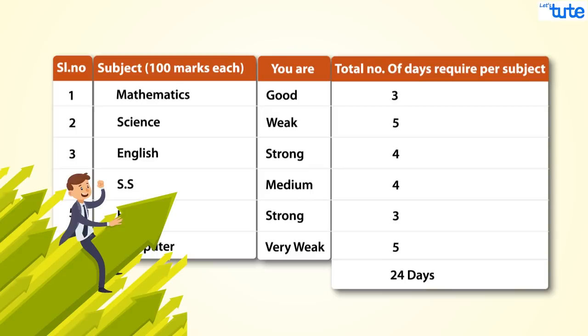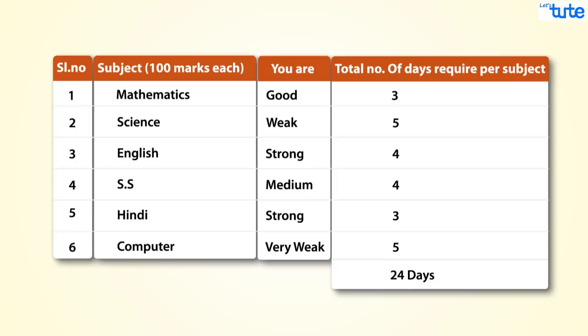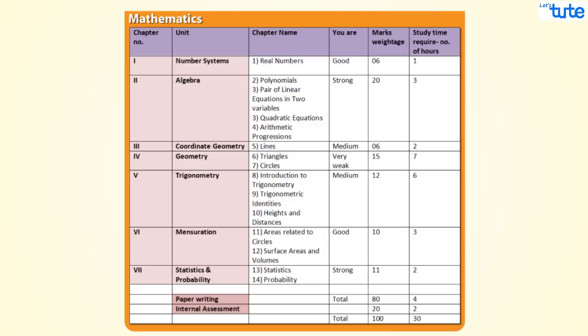This exercise is for all the subjects. Now let's do the time segregation for each subject. First, let's talk about mathematics. You can divide the time depending upon your conviction on the chapter. If, say suppose, you're weak at real numbers and that carries five marks weightage, then you can keep that topic for option or you can give less amount of time to that topic.